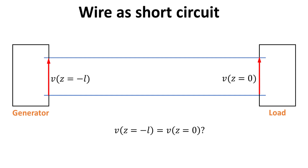Consider two wires forming a closed circuit connecting the generator and the load. In elementary circuit courses, we learned that the wires are modeled as short circuits, so the voltage across the generator end should be equal to that at the load end. Let Z be the coordinate denoting the position along the wire of length L.